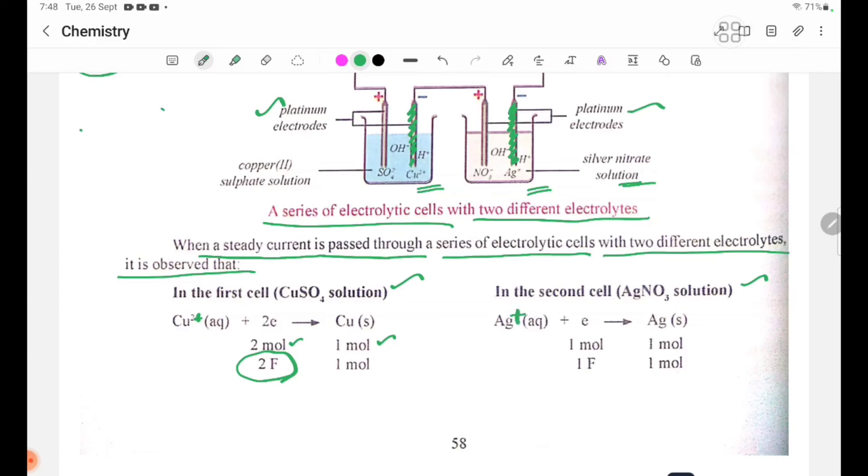Ag+ plus electron forms Ag solid. One mole of electrons is required for one mole of silver.